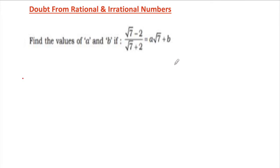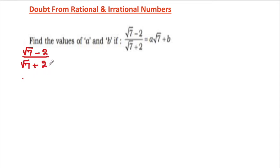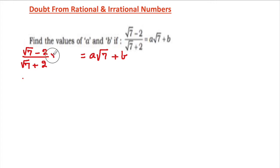Hello, Class 9 students. This is a doubt session on rational and irrational numbers. Lots of children don't like solving a question like this, but what we have to do is write the left hand side and we know it is equal to some value of a and some b. We know that this is an irrational number, so first we will rationalize the denominator.